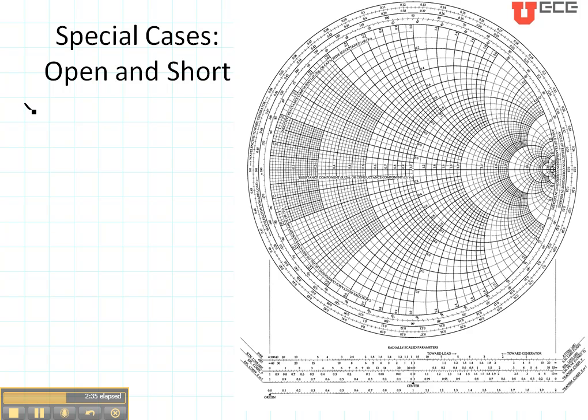So for an open, we know that the impedance of an open circuit is equal to infinity. So let's find where the real part becomes very, very big. Here's the real part of 1, here's the real part of 2, 50, and so on. Right here is where we have the impedance of an open circuit.